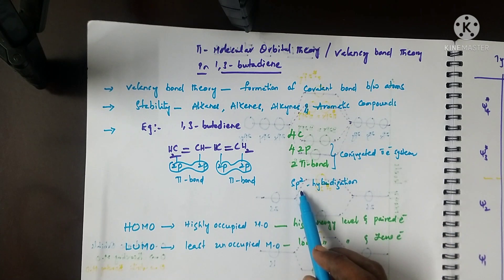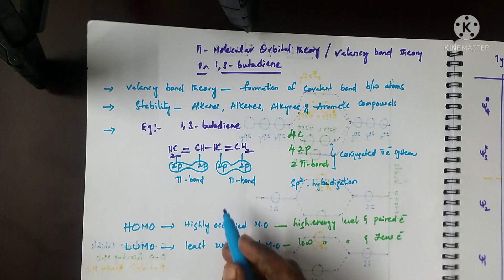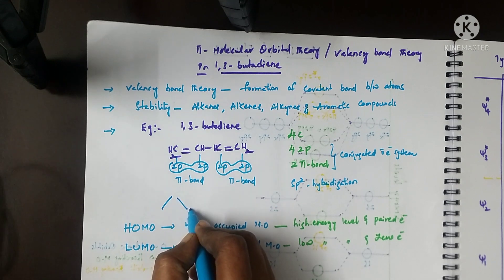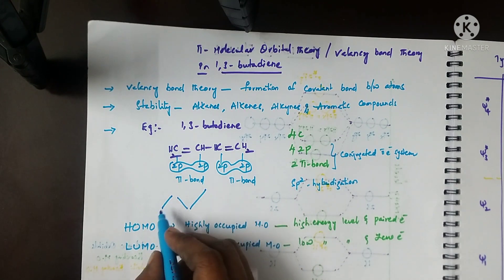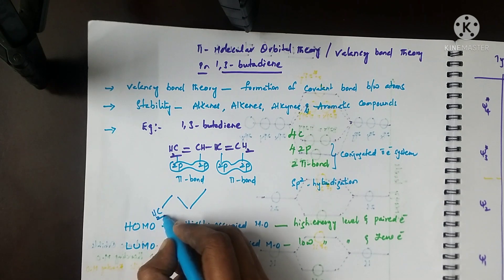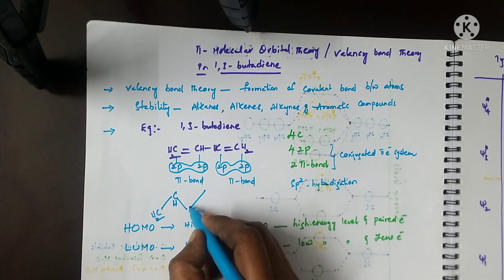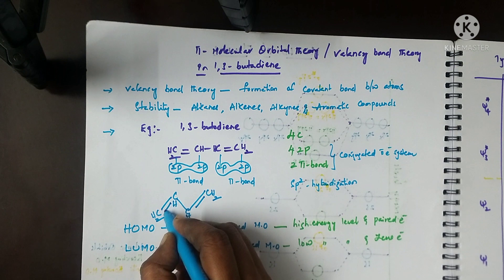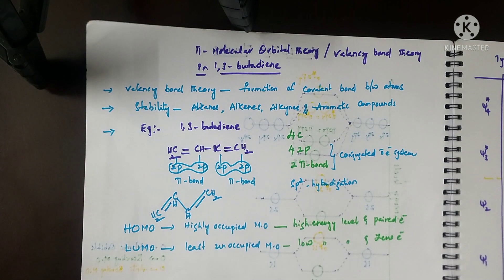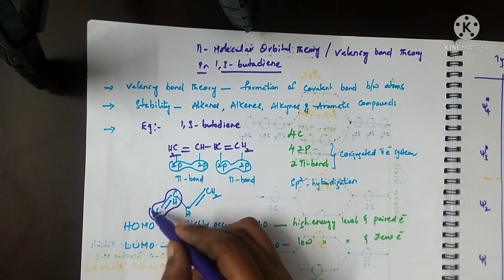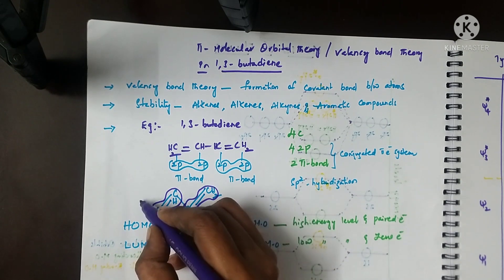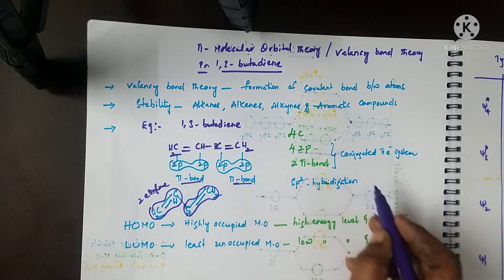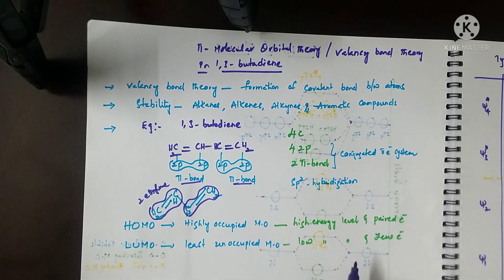Each carbon shows SP2 hybridization. The structure is written as CH2=CH–CH=CH2, with double bonds between carbons 1-2 and 3-4. This means 1,3-butadiene is made from two ethylene molecules, which are involved in two pi bond formations through a conjugated pi electron system.